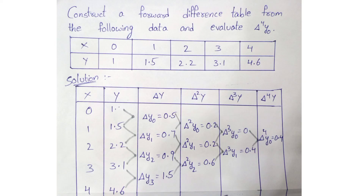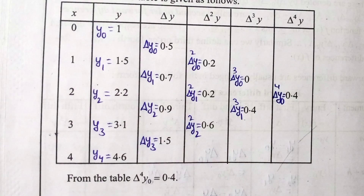Finally, we compute delta power 4 y0. Delta power 4 y0 = delta cubed y1 minus delta cubed y0 = 0.4 minus 0 = 0.4. So the answer to the question — the value of delta power 4 y0 — is 0.4.